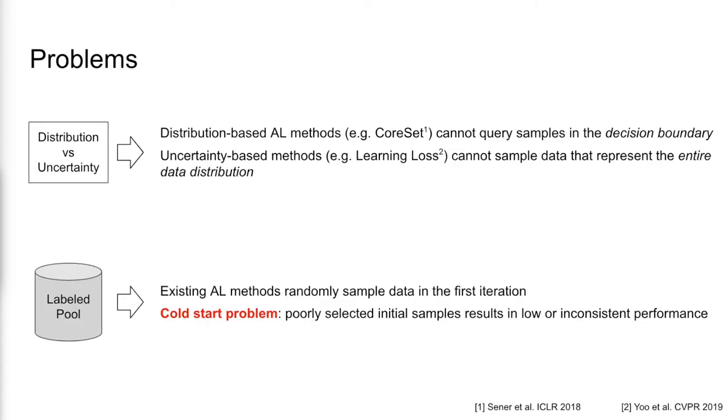Also, existing AL methods randomly sample data in the first iteration. This leads to a cold start problem where poorly selected initial samples can result in low or inconsistent performance.